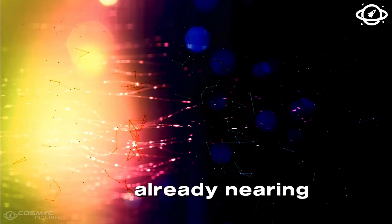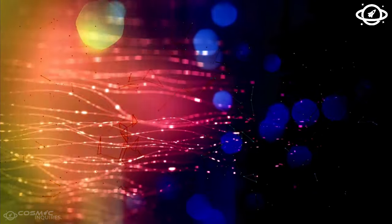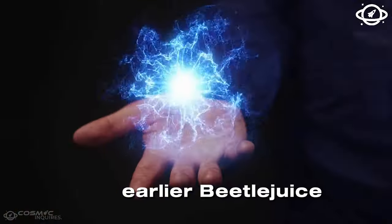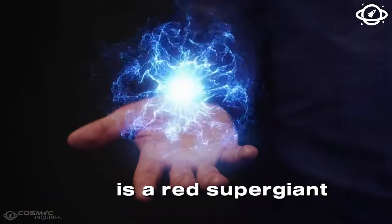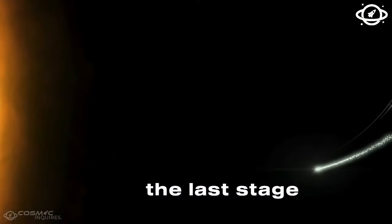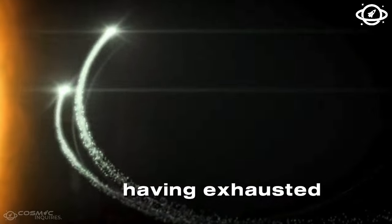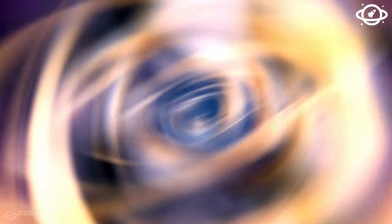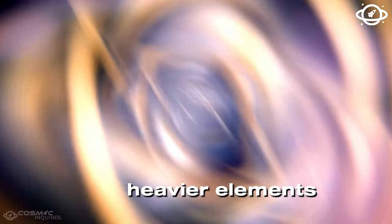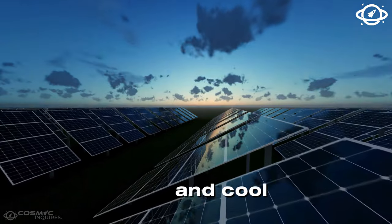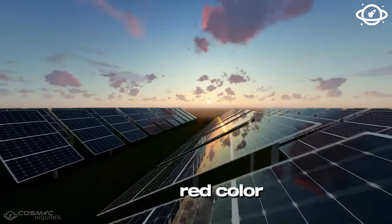However, it's already nearing the end of its life cycle. As mentioned earlier, Betelgeuse is a red supergiant, meaning that it's now in the last stage of its life. Having exhausted the hydrogen in its core, Betelgeuse is now fusing heavier elements, causing it to expand and cool, which gives it its characteristic red color.